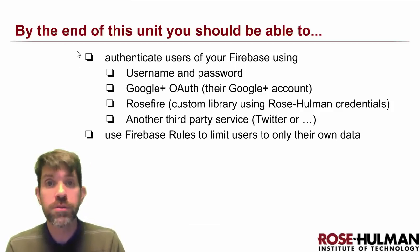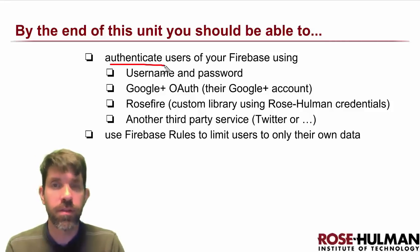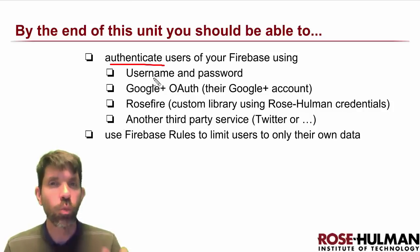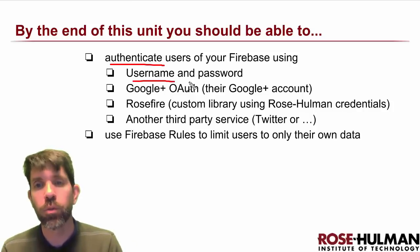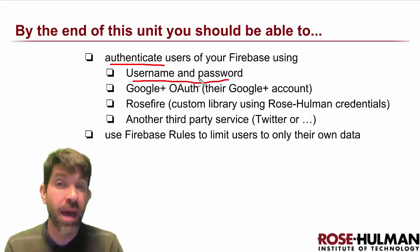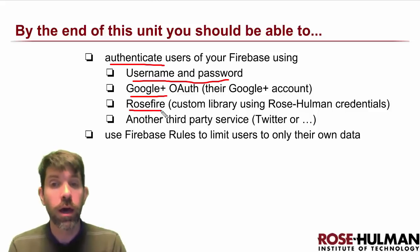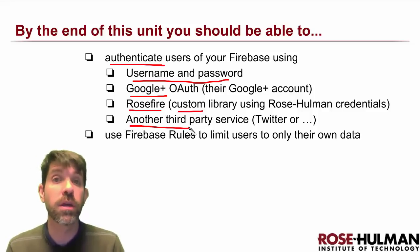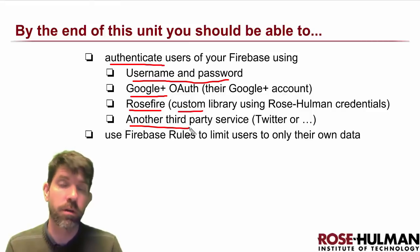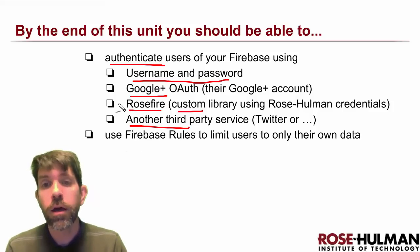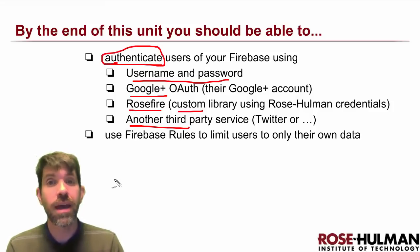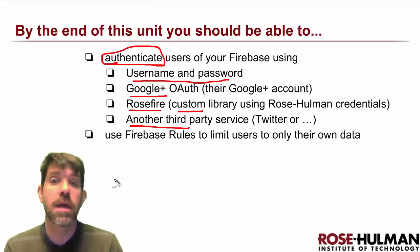Let's talk about our goals for the whole unit. It's really about authentication — different authentication methods work a little bit differently. We're going to work through three: the simple email and password kind built into Firebase, how it ties in with Google, and then RoseFire — a custom library for Rose-Hulman students. Finally in the lab, you're going to be doing another third-party service; most people will probably choose Twitter since it's fairly straightforward. We'll also learn about Firebase rules to limit access so users only see their own data and don't get access to everyone else's.